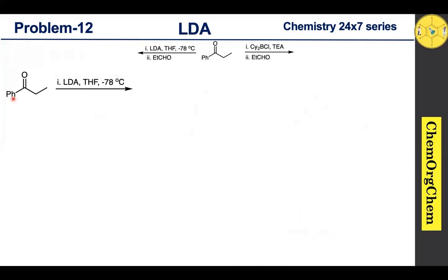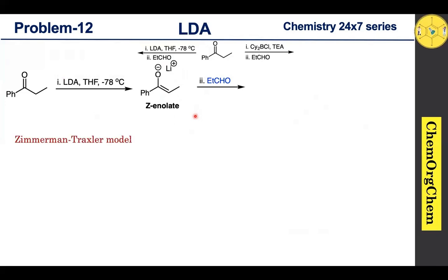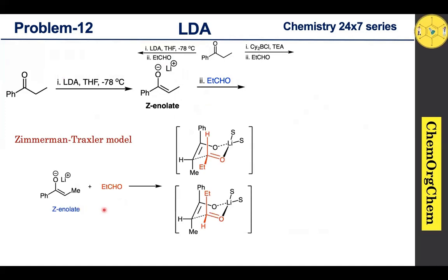Coming back to our question: when you use LDA, the group present is somewhat larger, therefore it readily produces E-enolate as the major form. Once we obtain the E-enolate, our second reaction condition is reaction with propanaldehyde. We can explain the selectivity using the Zimmermann-Traxler model, according to which this reaction proceeds through a six-membered cyclic chair-like transition state.